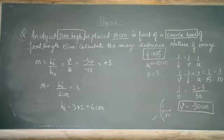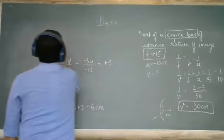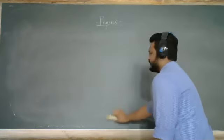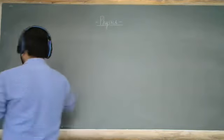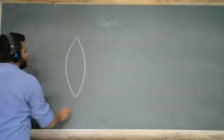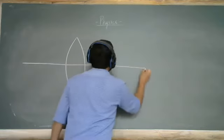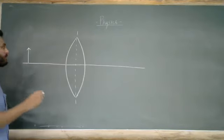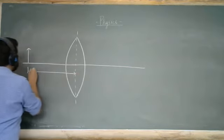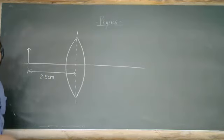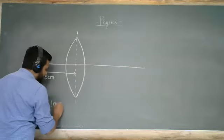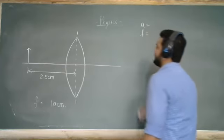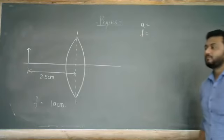Let us do one more question. In front of a convex lens, an object is placed at a distance of 25 cm. The focal length of the convex lens is 10 cm. First, tell me — is the object distance and focal length negative or positive? The lens formula is: 1/f = 1/v − 1/u, so 1/v = 1/f + 1/u.